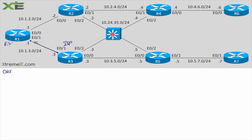Of course we want to filter out the routes we don't need. We can do a distribute list, a prefix list on the neighbor, a route map that matches an ACL — essentially a whole bunch of different route filtering mechanisms on R1. But the point is, where are the resources? The resources are going to be spent on our device. Service provider devices are usually much more powerful than ours.